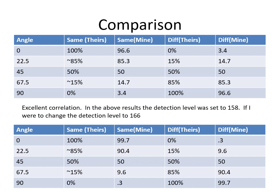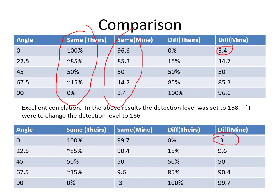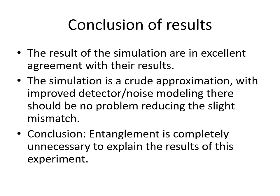Here's our comparison. We set the signal amplitude to 158. This is their result for the 'same' case, and this is mine for the same case — pretty damn good. This is theirs for the 'diff' case, and this is mine for the diff case. We're a little bit off here, but if we change the level to 166, we get much closer to zero. I found there are many variations of detector amplitude and signal level that produce valid solutions. My conclusion is that the simulation results are in excellent agreement. The simulation is a crude approximation, and with improved detector noise modeling there should be no problem reducing the slight mismatch. Conclusion: entanglement is completely unnecessary to explain the results of this experiment. It's just normal engineering.